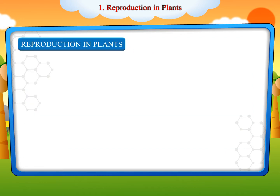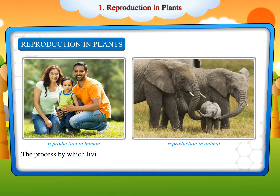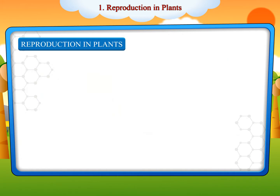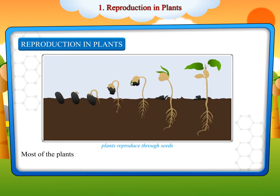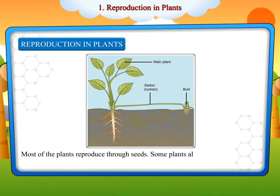Reproduction in Plants: The process by which living organisms produce new organisms of the same kind is called reproduction. Most of the plants reproduce through seeds. Some plants also reproduce through stems, roots and leaves.